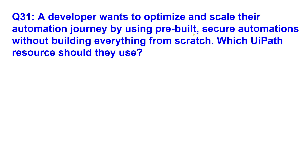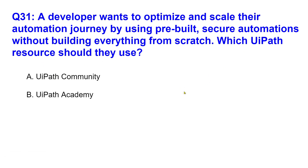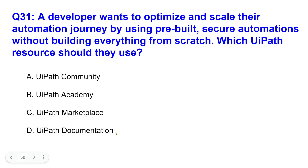While reading the question, it is important to mark the keyword. The keyword here is 'pre-built secure automation' — so, already built. Which one should they use? UiPath Community, UiPath Academy, UiPath Marketplace, or UiPath Documentation?